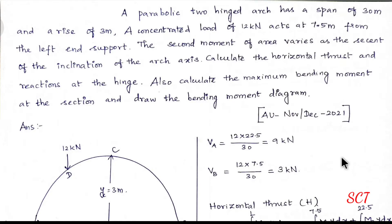Hello friends. In this session, we have a two-hinged parabolic arch. Two-hinged arch and three-hinged arch are already different. Three-hinged arch is a statically determinate structure and two-hinged is a statically indeterminate structure. So, we have to find the horizontal thrust.